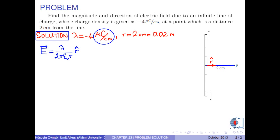As you see, the unit of microcolons per centimeter is not an SI unit. Therefore, we have to convert it into coulombs per meter. First, we write negative 4 microcolons per centimeter.